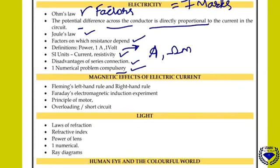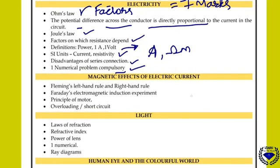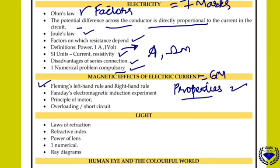Coming to magnetic effect of electric current — in board state and model question paper, six marks are already fixed. So in board exam also you can expect six marks only. Key topics: three properties of magnetic field lines — this is a fixed question. Fleming's left hand rule, right hand rule, and right hand thumb rule. Faraday's electromagnetic induction experiment — that is also very important. Principle of motor — either one diagram or a fixed question, which is motor or generator. Overloading and short circuit — also important.